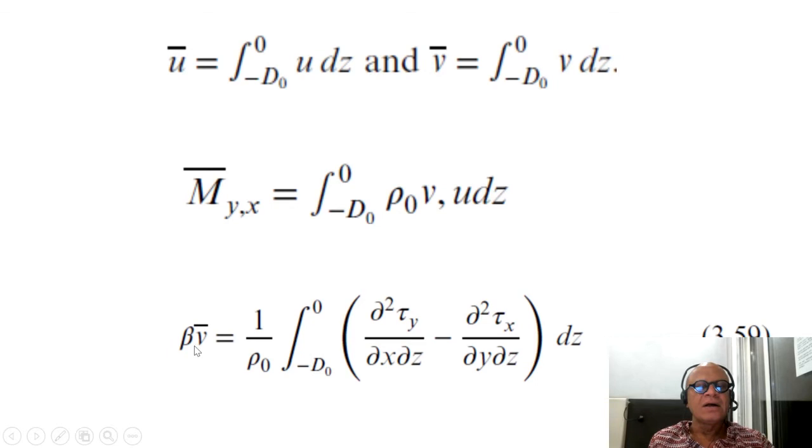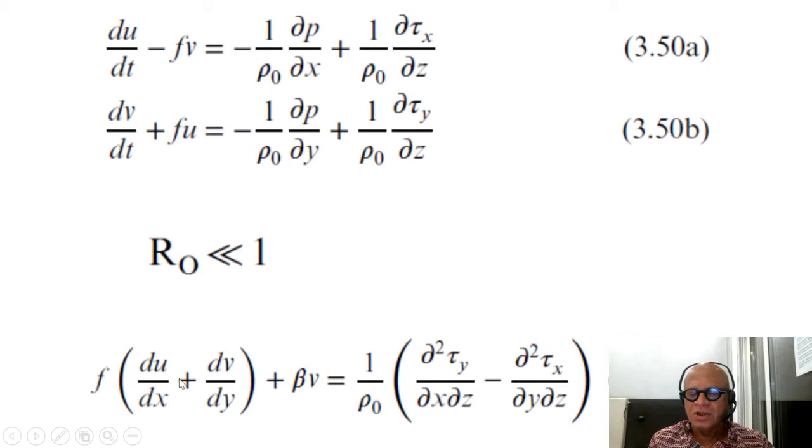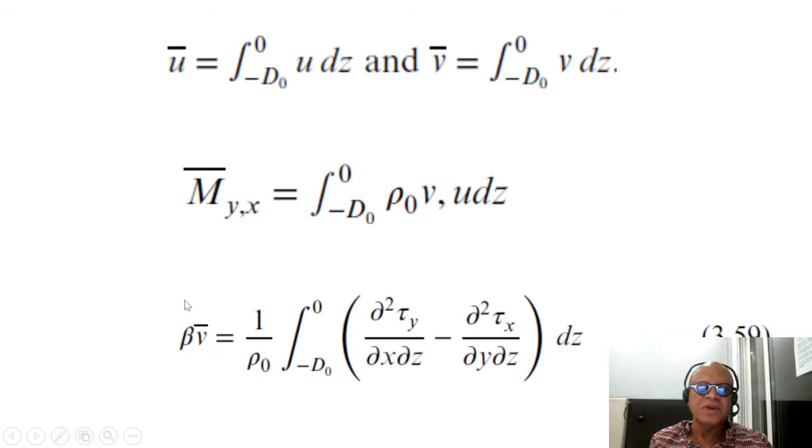That gives us essentially integrated—so substituting that into our equation here. If we integrate this over the depth as well, what are we going to get? We're going to get depth integrated meridional transport. Using the continuity equation on this one, we can write the square root transport here. Beta times integrated meridional transport is given by 1 over rho_0 minus D_0 to 0 integral of d²tau_y/dx dz minus d²tau_x/dy dz.